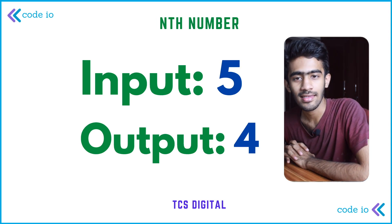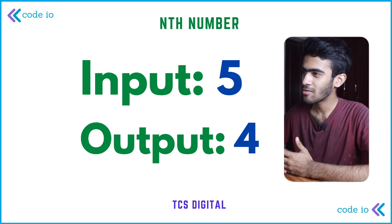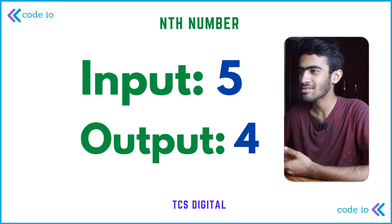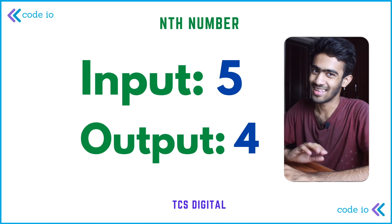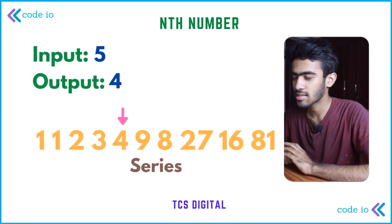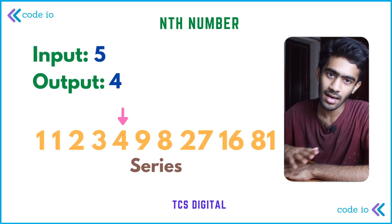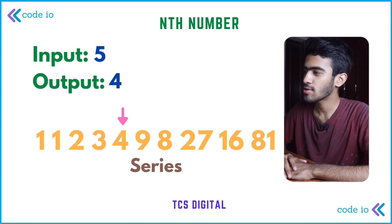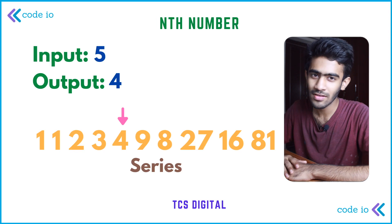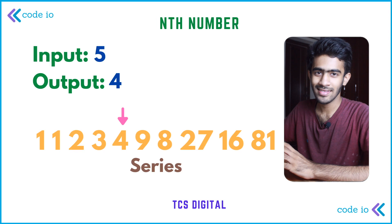So the question is the nth number — this is a TCS Digital interview question. We will give input 5 and output 4. We will give a series, and in this series we will find the fifth number. The fifth element gives output 4. So this is the question.